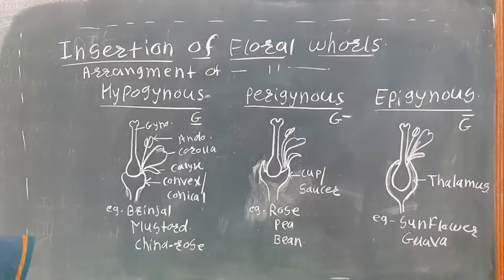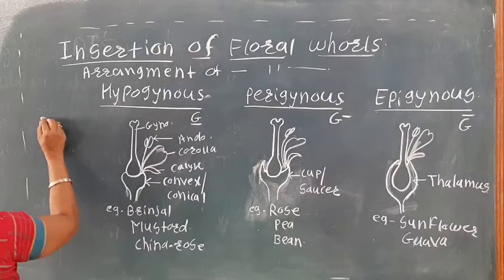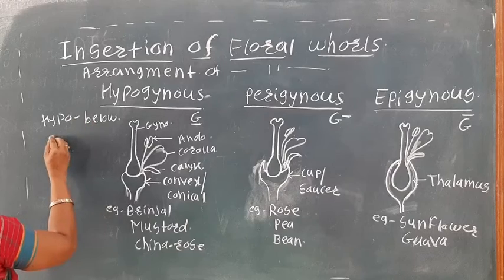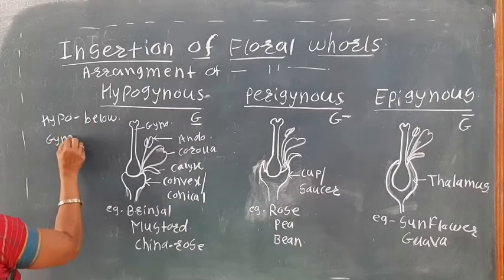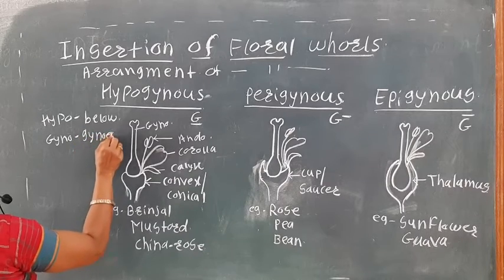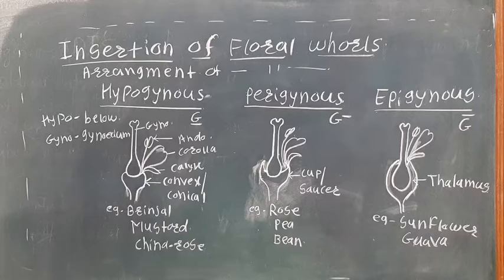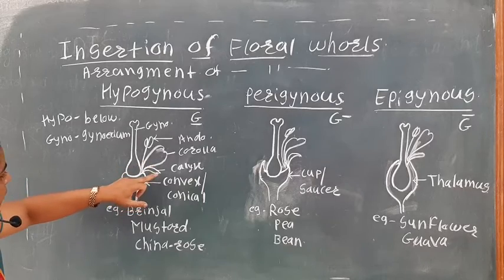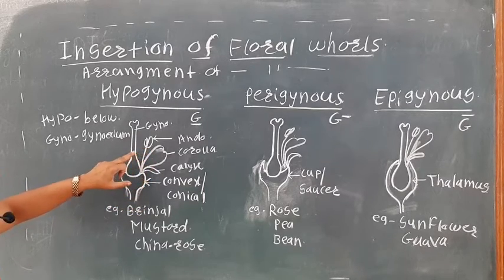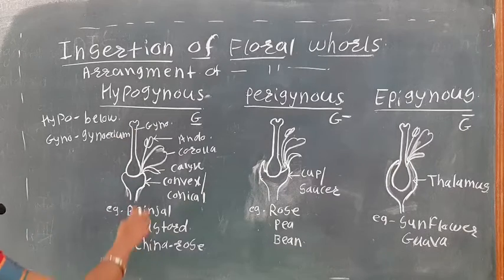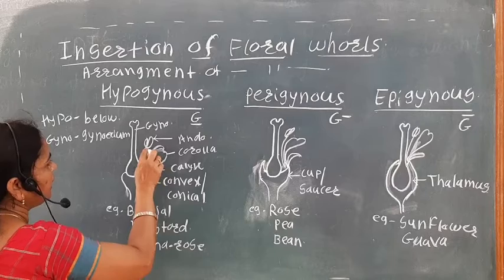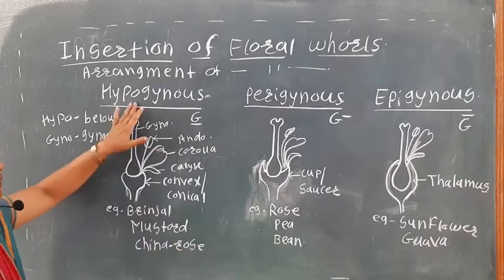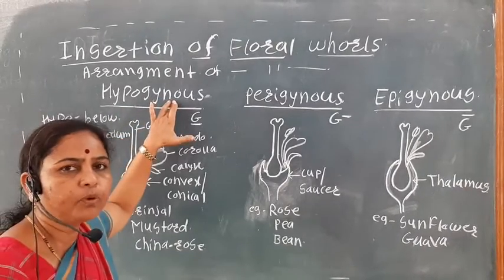In the hypogynous flower, 'hypo' means below and 'gyno' means gynoecium. So the floral whorls — that is the calyx, corolla, and androecium — are below the gynoecium. These flowers are known as hypogynous flowers.